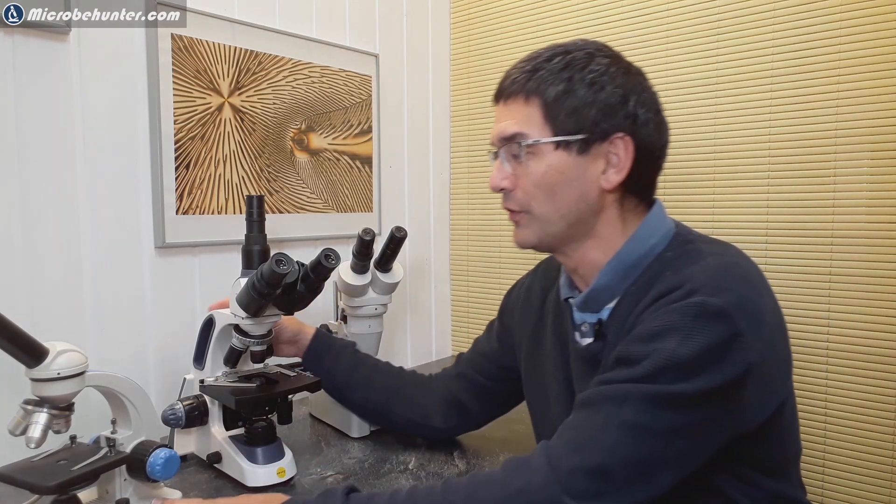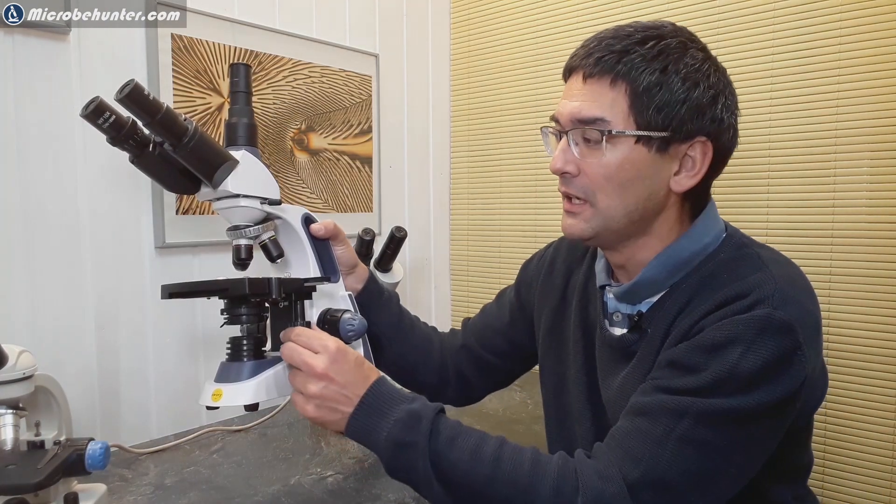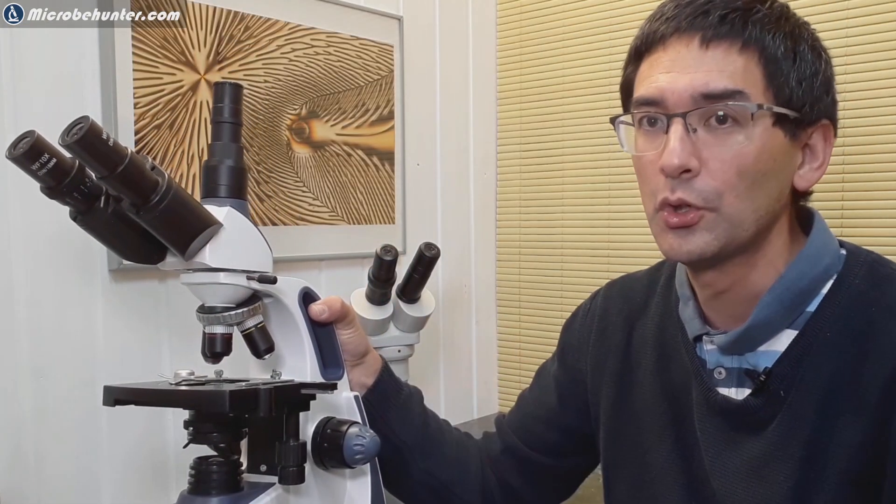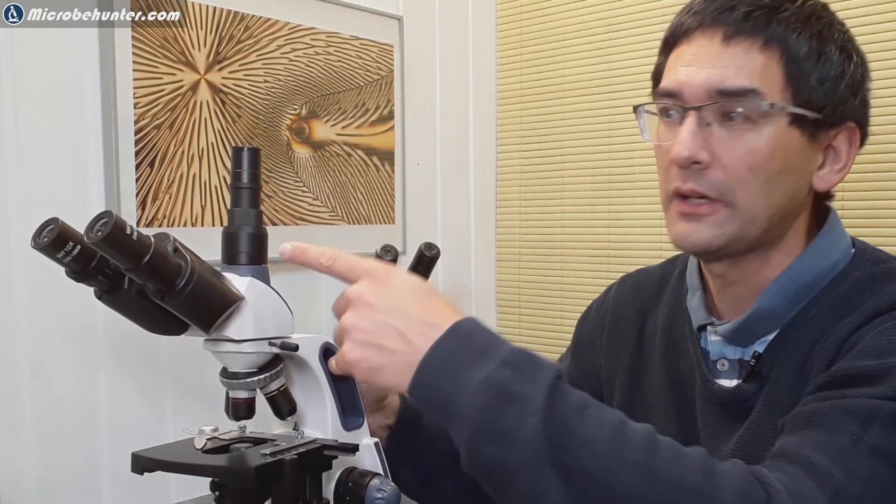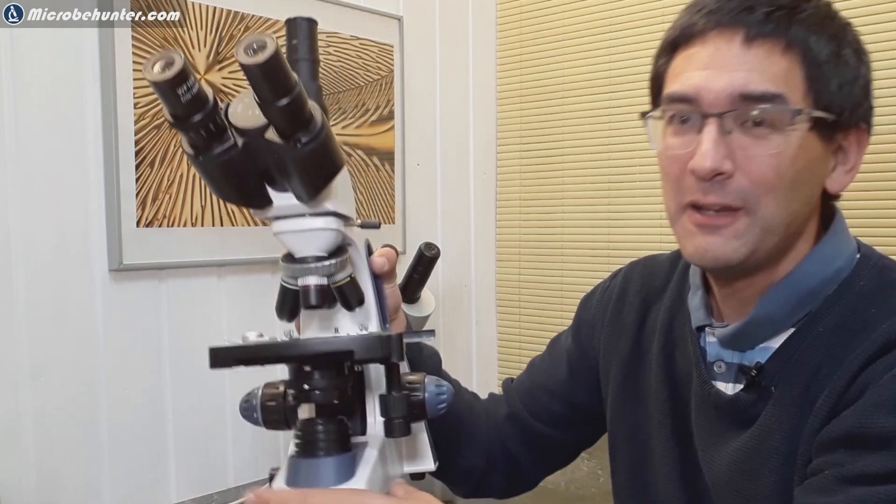If you however already have a slightly better model, I'm just going to use this one over here as an example or one that is similar, I mean it's already significantly larger as you can see. It has over here a mechanical stage, it has got four objectives also oil immersion, a trinocular head for a camera of course, and of course the aforementioned condenser with an aperture diaphragm.